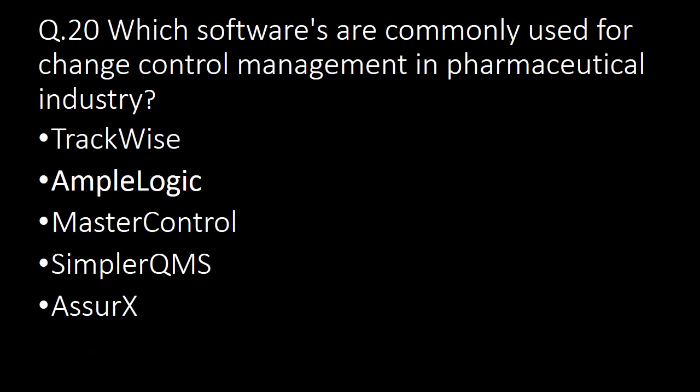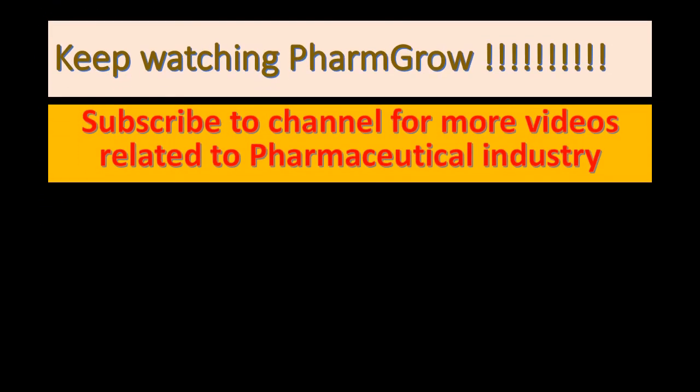Which software are commonly used for change control management in the pharmaceutical industry? There are many software options available. Five commonly mentioned are: TrackWise, AmpleLogic, MasterControl, SimplerQMS, and AssureX. Keep watching and subscribe to the channel for more videos related to the pharmaceutical industry.